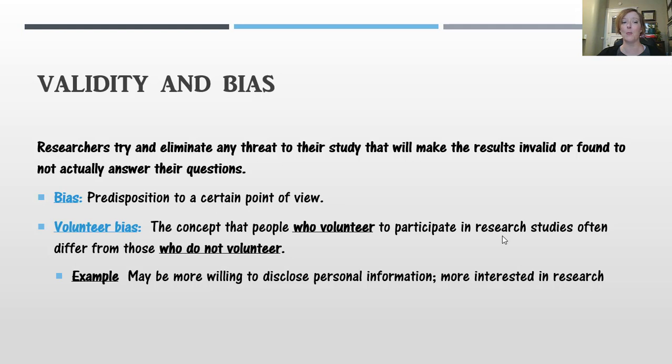A bias is just a predisposition to a certain point of view, and even when you have volunteers for a study, you could have what's called a volunteer bias. Basically, that means that people who volunteer to participate in research often have a predisposed idea about research. They often have beliefs about research. Maybe they're very fond of doing research, and so they may be more willing to disclose personal information because of their increased interest in research. So all of that to say that you have to be very careful about how you set up your research.